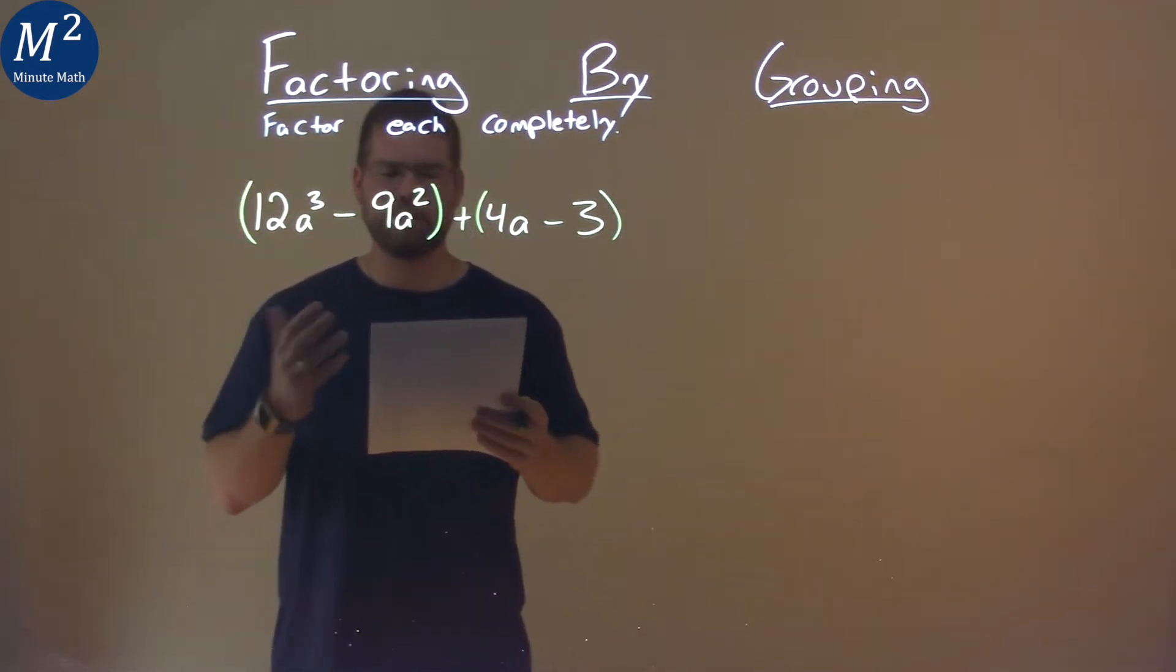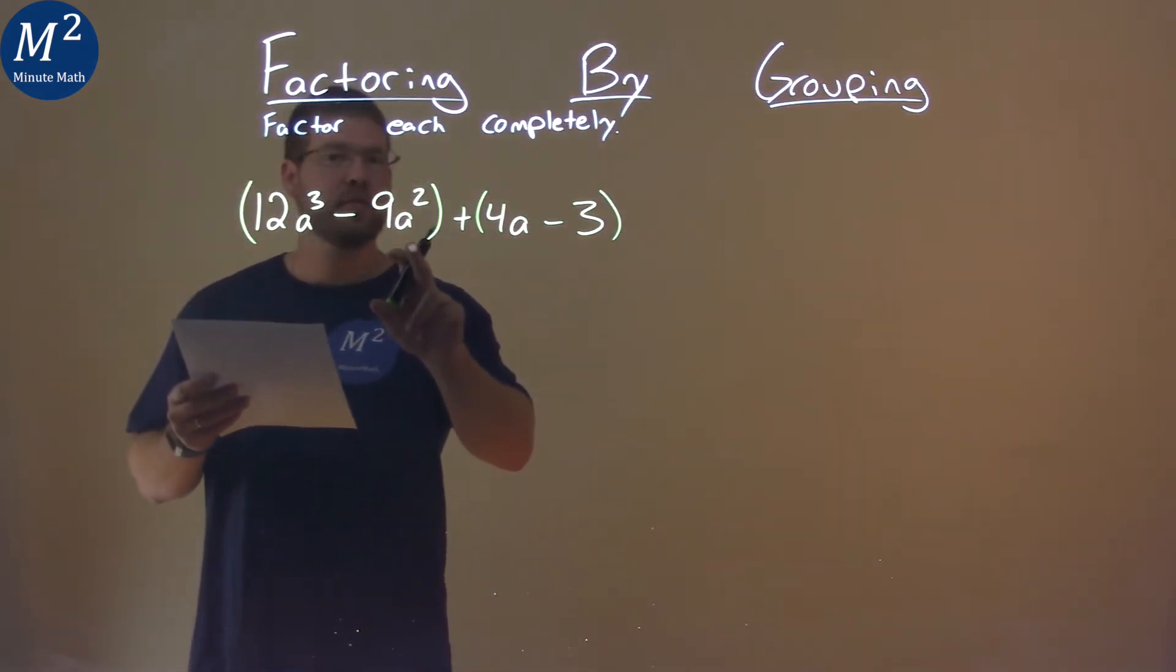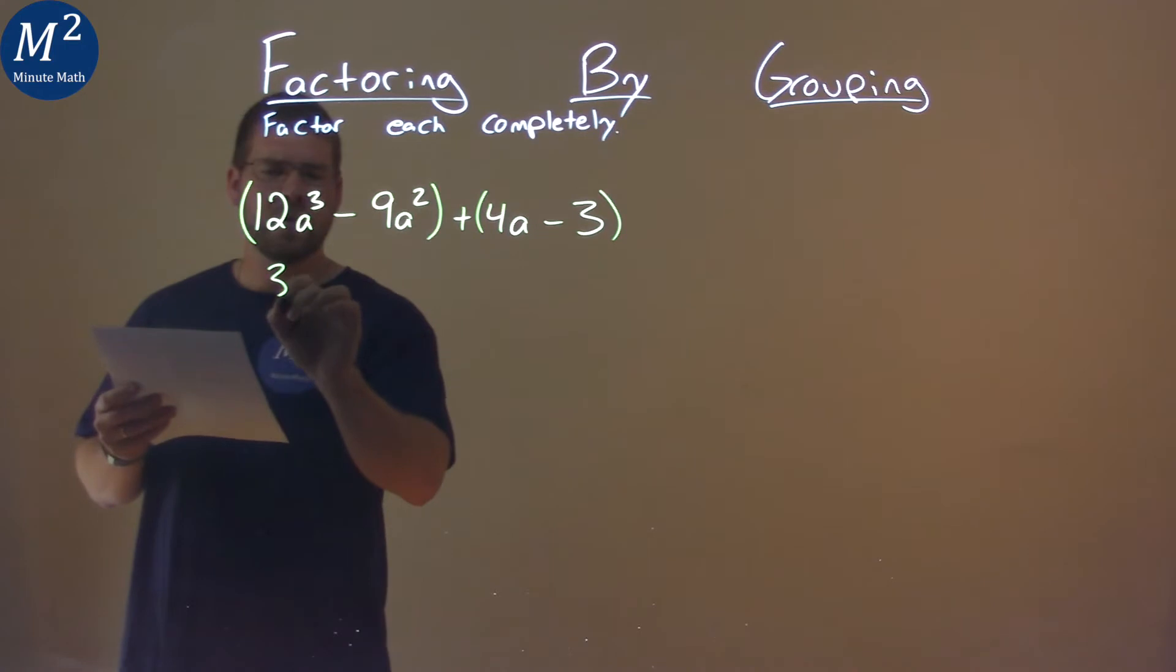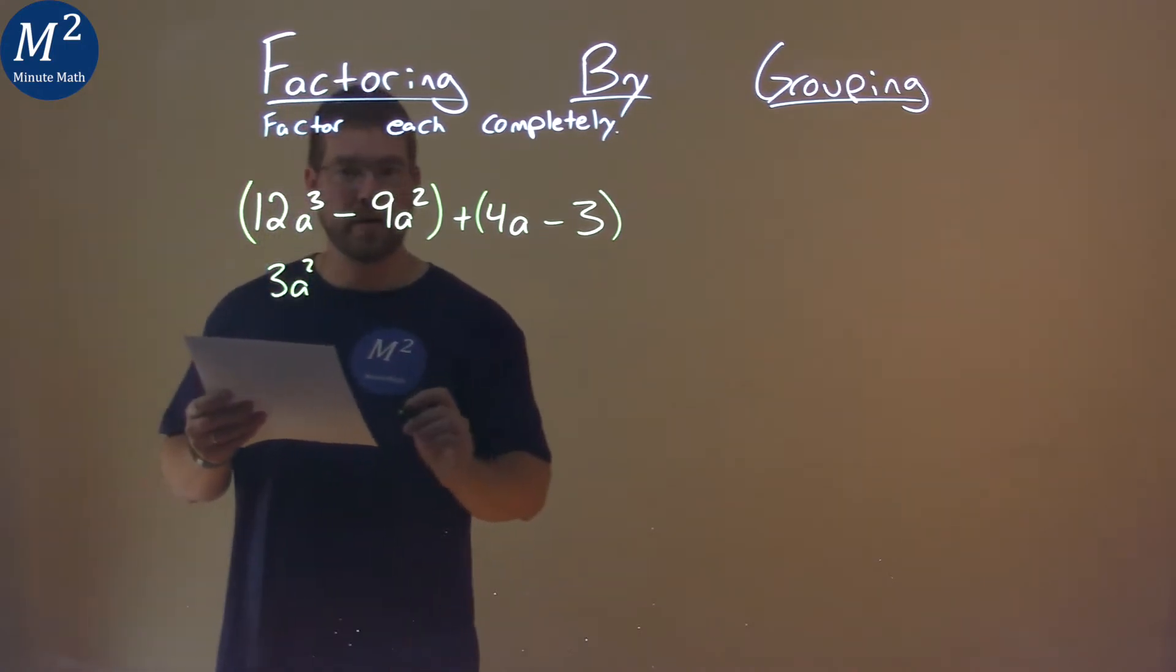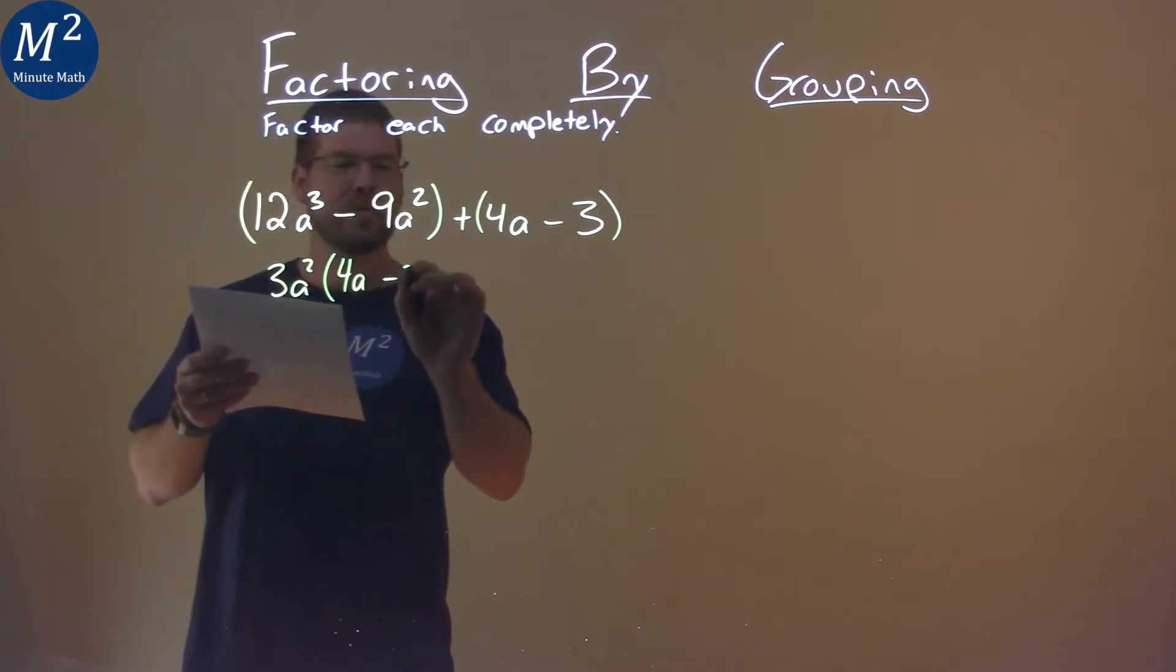So, what do we see here? Well, in this first group here, I see I can pull out a 3a squared. So, by pulling out a 3a squared here, I am left with a 4a minus 3.